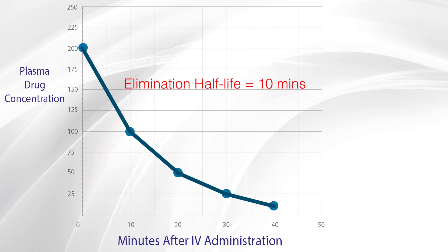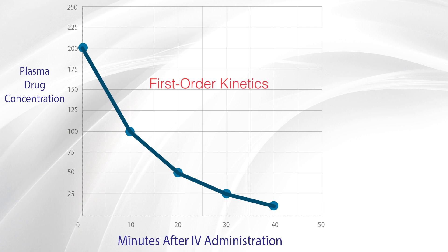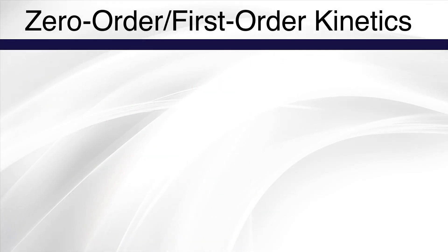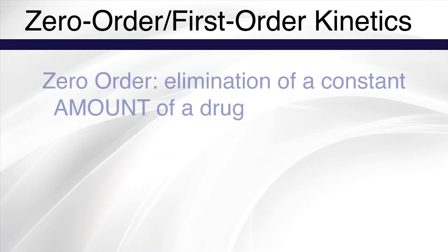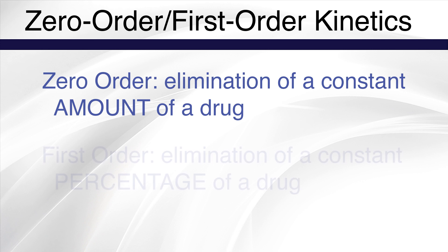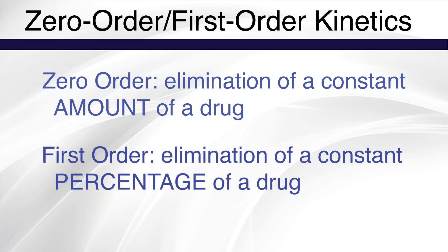If you notice, it takes the same amount of time to reduce by half regardless of the current concentration. This is referred to as first-order kinetics or a first-order process. So zero-order kinetics is the elimination of a constant amount of a drug per unit of time, and first-order kinetics is the elimination of a constant percentage of a drug per unit of time.